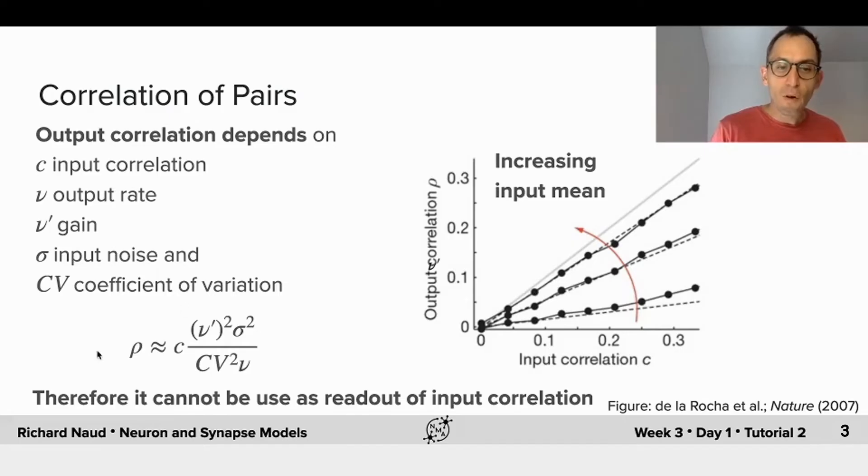The overall equation can be approximated to look like this, where the output correlation depends on the input correlation, the gain of the rate input-output function, the noise, the CV of the output, and the rate of the output in this fairly complex equation.